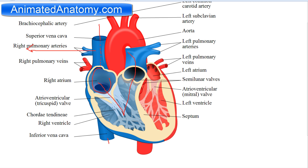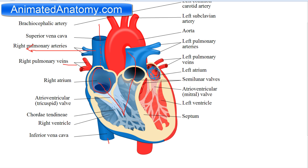Then the O2-rich blood comes through these pulmonary veins and enters the left atrium. Note that you have the left pulmonary veins here. With the same principle, blood enters the left ventricle. When the left ventricle contracts, the valve closes and the blood goes here through the aorta — which is behind the pulmonary trunk — and exits to the body.